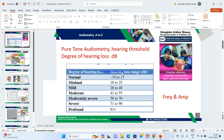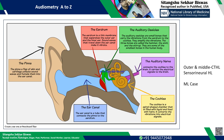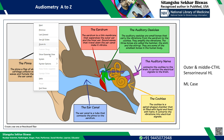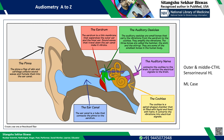Welcome, dear learners. Today we are going to discuss in detail about audiometry. Audiometry will indicate the degree of hearing loss — whether there is any problem in the ear or not. First, we will see how we recognize a sound, covering the ear anatomy. We won't go into depth on ear anatomy; our main topic is to read the audiometry report.